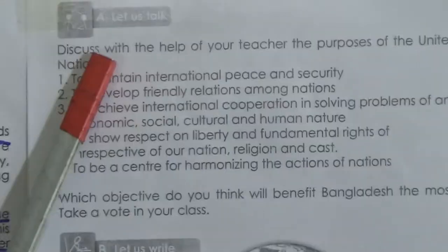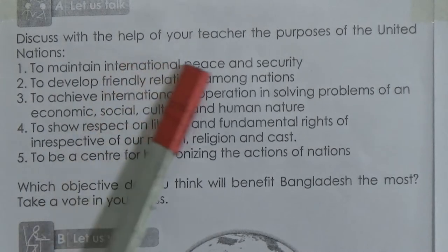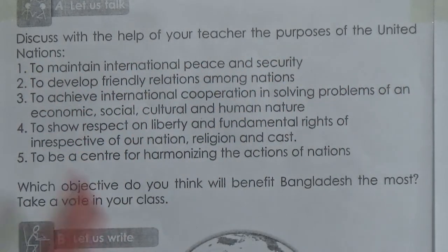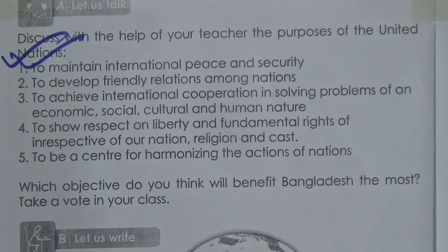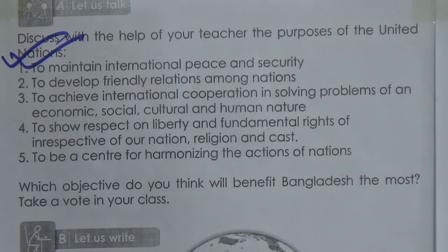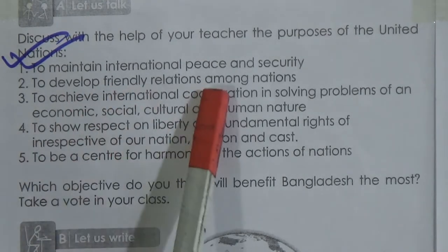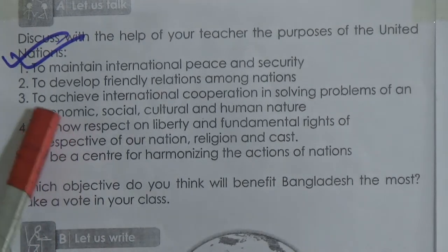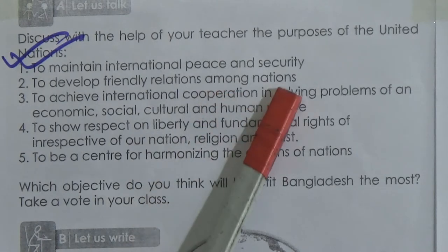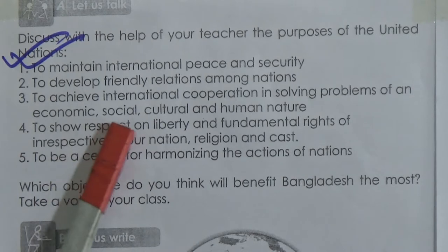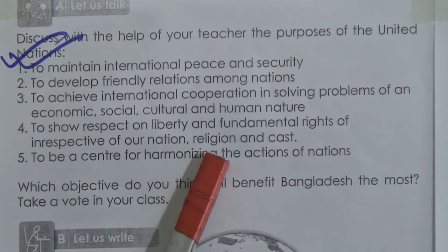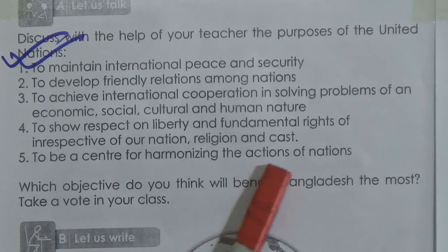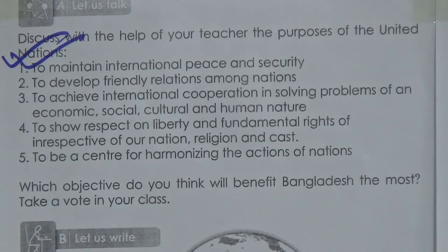Now, Section A — discuss the purposes of the United Nations. There are five important purposes: one, to maintain international peace and security; two, to develop friendly relations among nations; three, to achieve international cooperation in solving economic, social, cultural, and humanitarian problems; four, to show respect for liberty and fundamental rights irrespective of nation, religion, and caste; and five, to be a center for harmonizing the actions of nations.